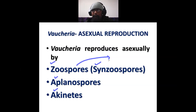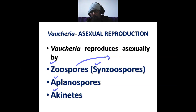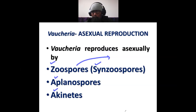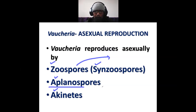Zoospores are formed in aquatic species under normal environmental conditions — meaning when there is plenty of water in the exterior environment. At that time, the aquatic species of Vaucheria reproduce by zoospore formation. The second type is aplanospore formation.